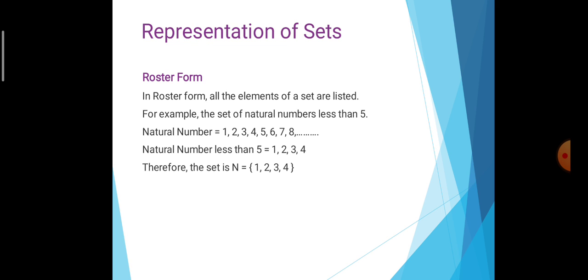First one: roaster form. In roaster form, all the elements of a set are listed. For example, the set of natural numbers less than 5. Natural numbers are 1, 2, 3, 4, 5, 6, 7, 8... What we need are natural numbers less than 5: 1, 2, 3, 4. Therefore, the set N = {1, 2, 3, 4}. It is listed — this is roaster form.